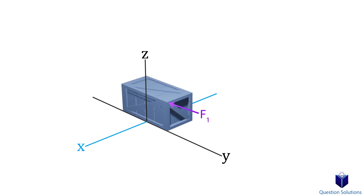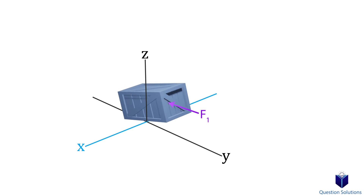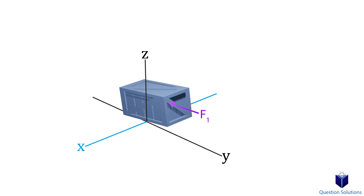Let's look at just force F1. When we apply it we see that the box will turn about the x-axis. It doesn't matter if we move this force along the right edge of the box, because the moment created about the x-axis is based on the perpendicular distance from the axis itself.